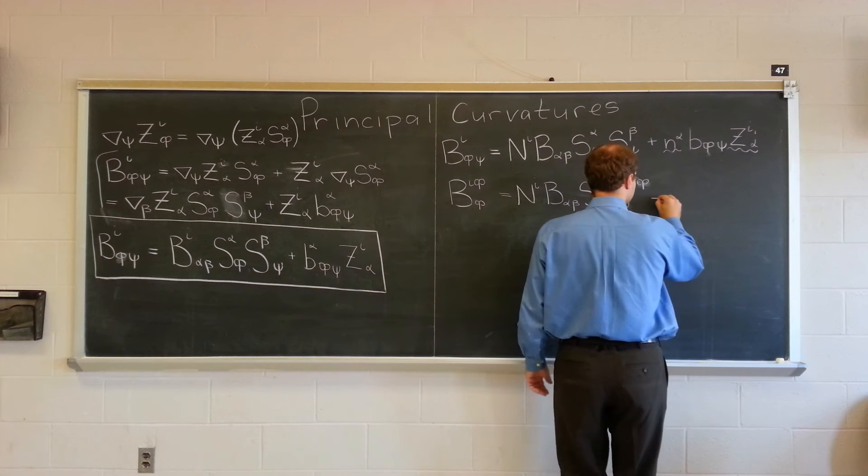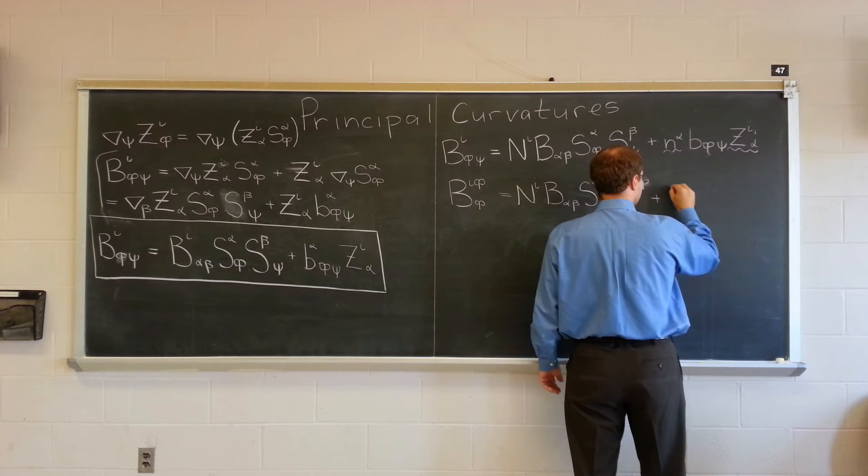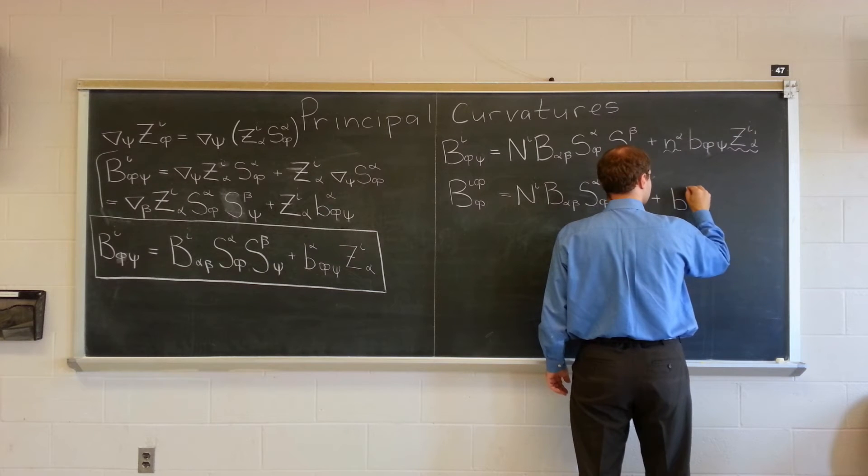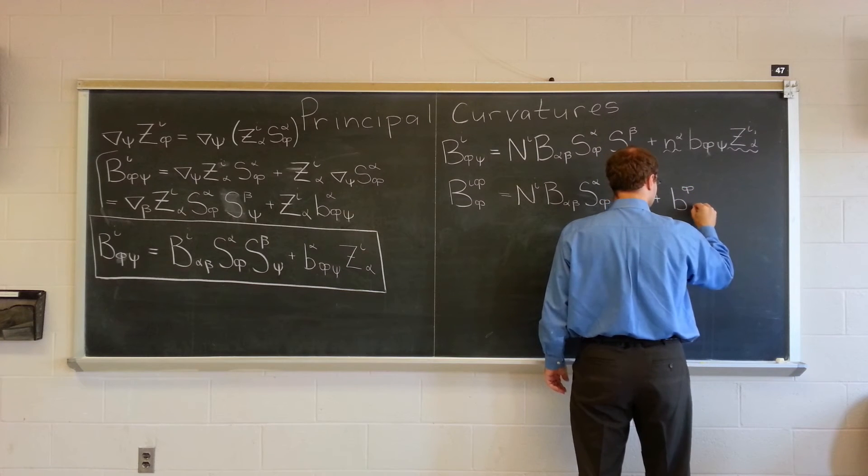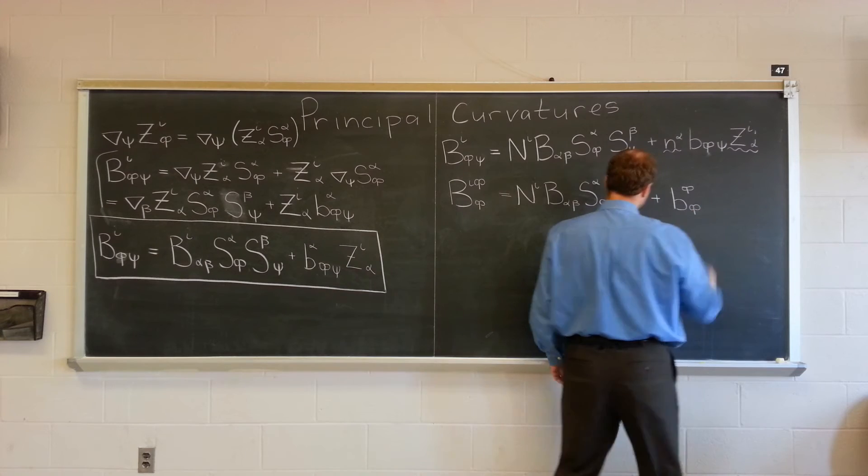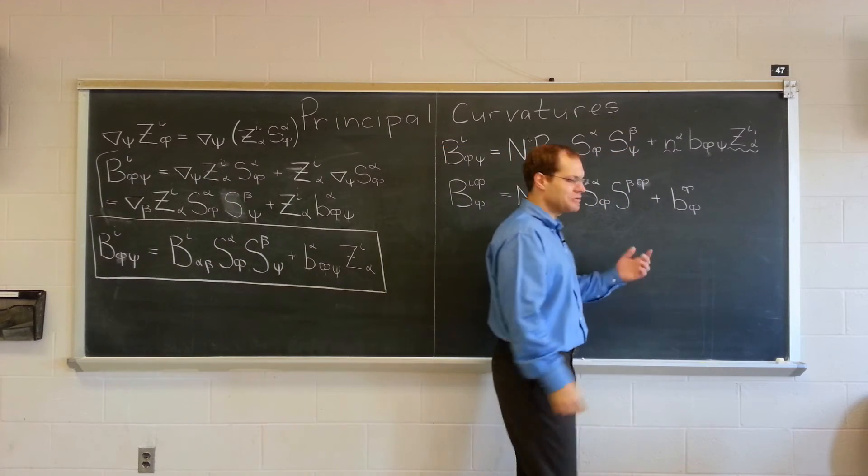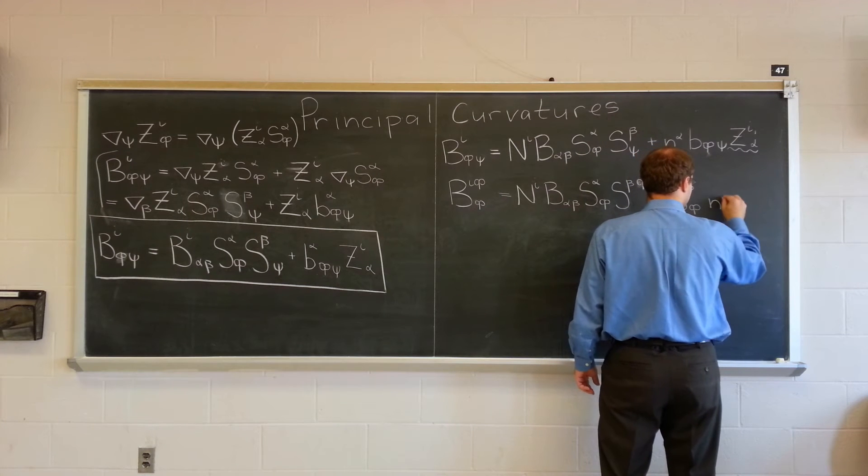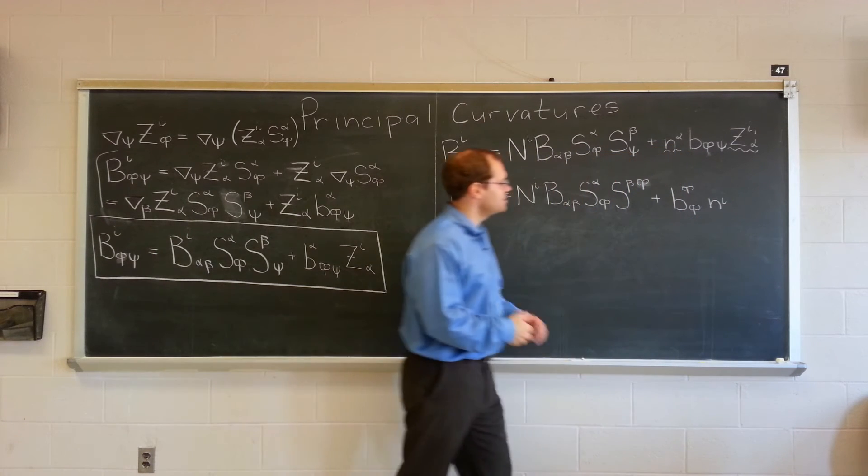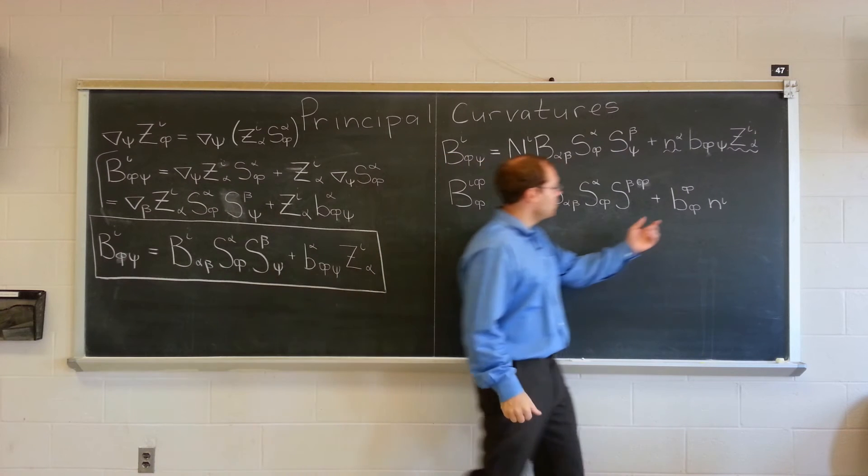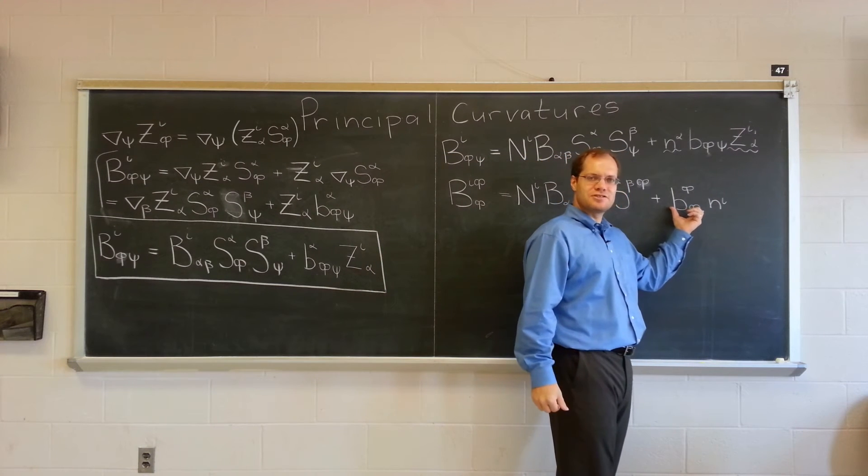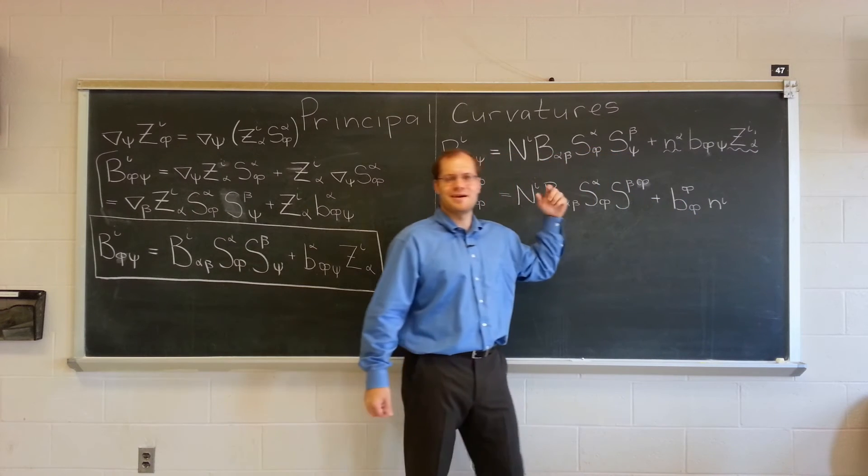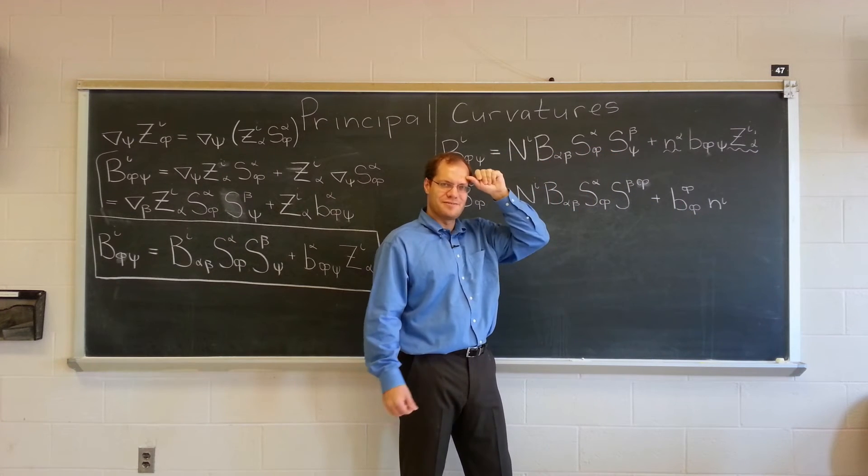Because we raised and contracted. Very good. Plus, B phi phi. Beautiful object. Mean curvature. My favorite. Doesn't look as pretty as B alpha alpha. But it's every bit as beautiful. Times n I. So, that's n i that makes the appearance. As promised. So, this is actually very interesting.